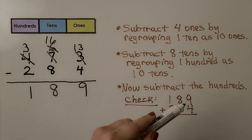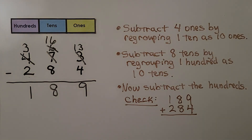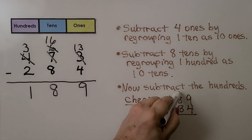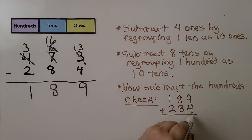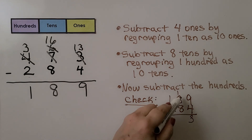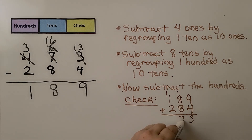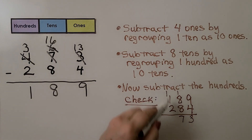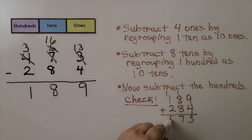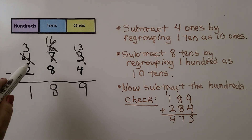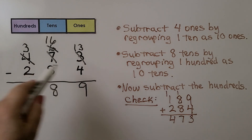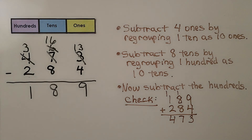We add the ones place: nine plus four is thirteen. We regroup a ten and write a three in the ones place. Eight plus eight is sixteen, plus one more is seventeen. We regroup and put the seven in the tens place. Two, three, four — we have four hundred seventy-three, and four hundred seventy-three was our original minuend. We know we did our subtraction correctly.